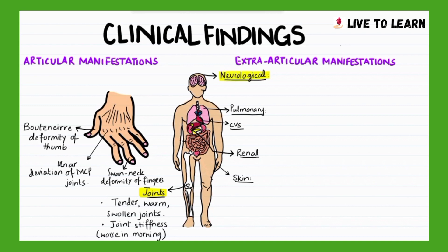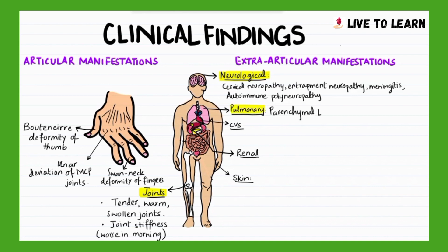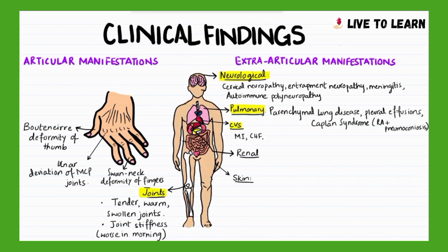Extra-articular manifestations include neurological problems such as cervical neuropathy, entrapment neuropathy, meningitis, and autoimmune polyneuropathy. Pulmonary manifestations include parenchymal lung disease, pleural effusions, and Caplan's syndrome, which is a combination of rheumatoid arthritis and pneumoconiosis. Cardiovascular manifestations such as myocardial infarction, congestive heart failure, and pericarditis are occasionally seen.